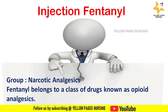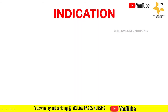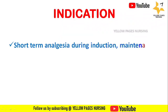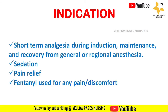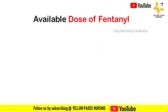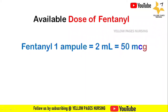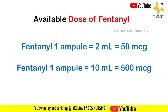The indications for using injection fentanyl include short-term analgesia during induction, maintenance, and recovery from general or regional anesthesia, sedation, and pain relief. Fentanyl is used for any pain or discomfort. Fentanyl comes in ampule form: one is a 2 ml ampule containing 50 micrograms, and the other is a 10 ml ampule containing 500 micrograms.